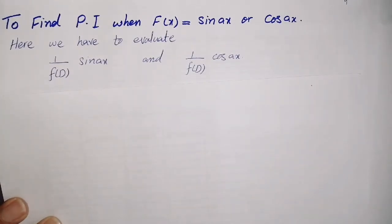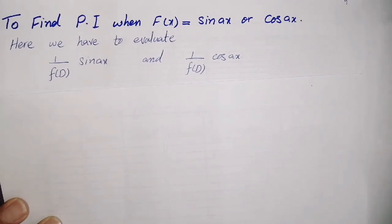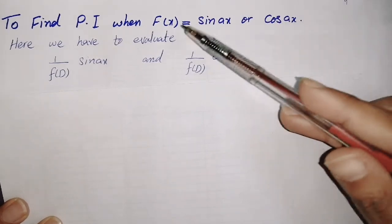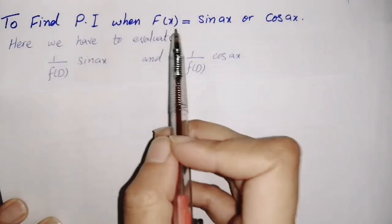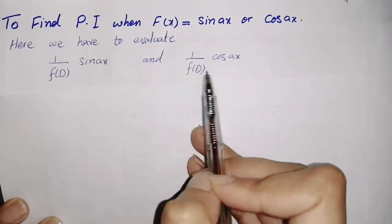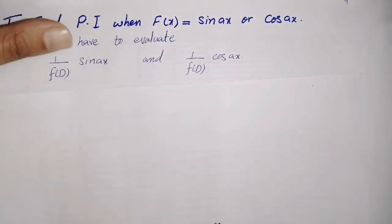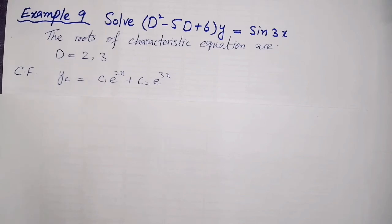Assalamualaikum students. In today's lecture we will see how to find the particular integral when f(x) equals sine x and cos x. The previous lecture was when f(x) is an exponential function. Now for a non-homogeneous differential equation of higher order, if f(x) is in the form of sin or cos, then the working rule is: 1/f(D) · sin x, and for cos it is 1/f(D) · cos x.